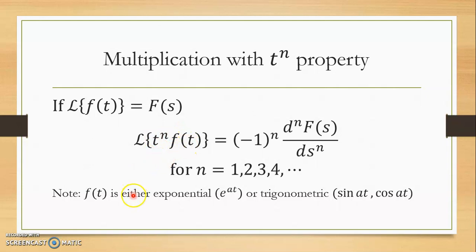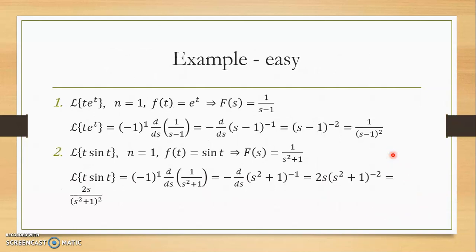You can see that f(t) can be in the form of an exponential function e^t, or trigonometric functions sin(at) and cos(at). Now let's take a look at a few examples. For the first question, we have the Laplace transform of t · e^t. You can see that t is to the power of 1, therefore n is 1, and the function f(t) is e^t.